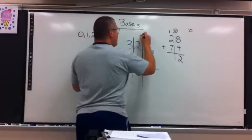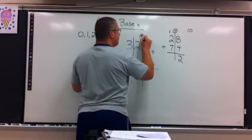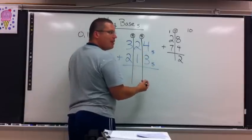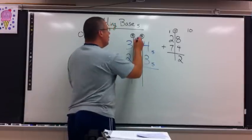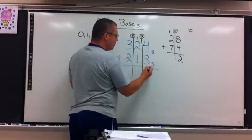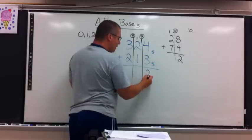In base 5, 5 is always my magic number. So let's check. 4 plus 3 is 7. How many 5s can I carry out of 7? 1. So that's what gets carried. 4 plus 3 is 7. Take away the 5. I'm left with 2.